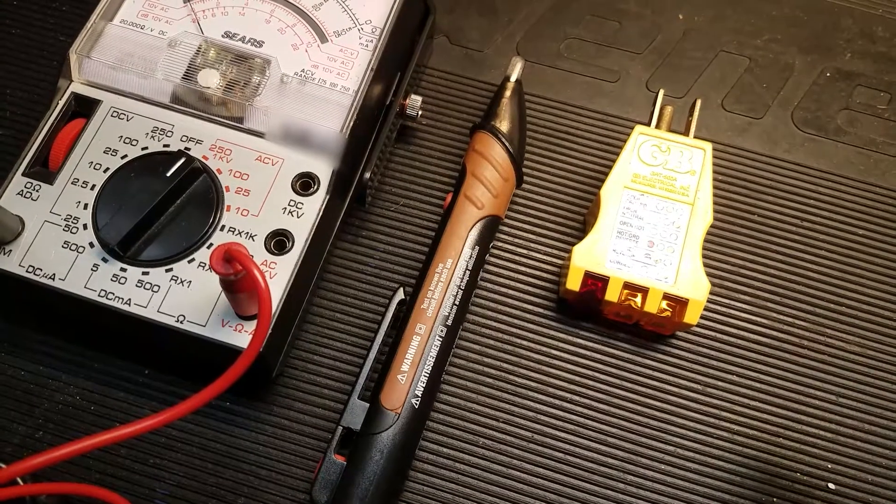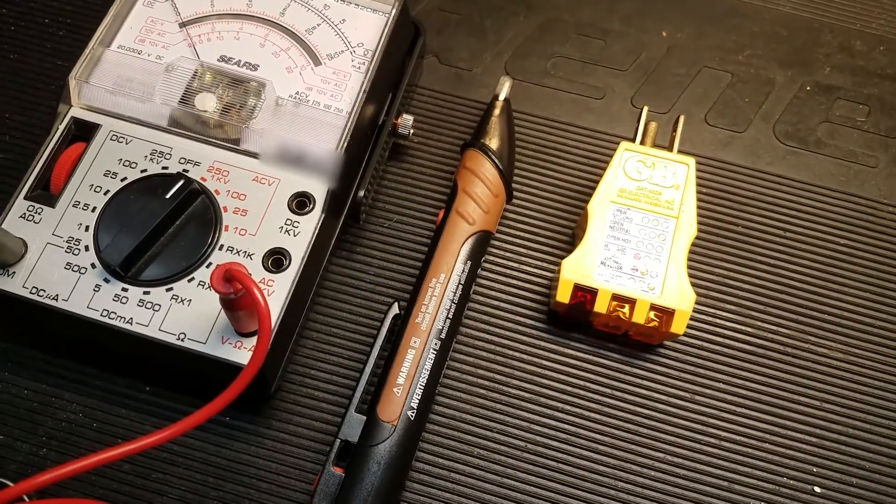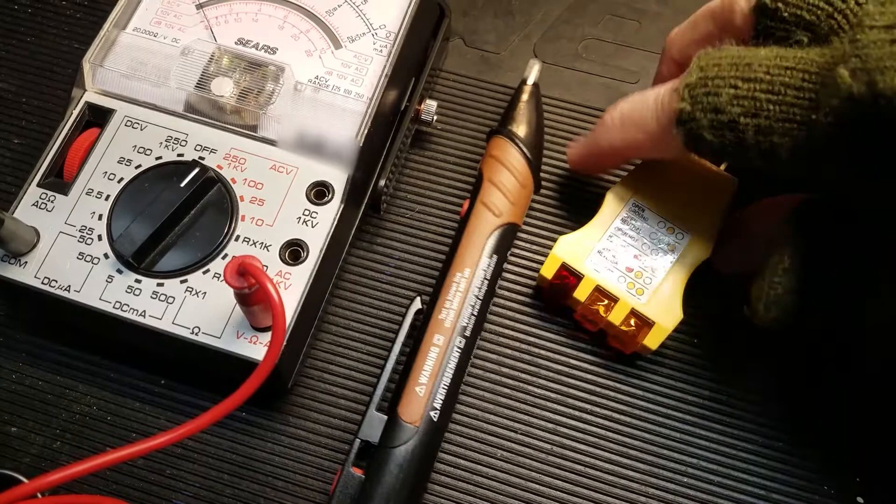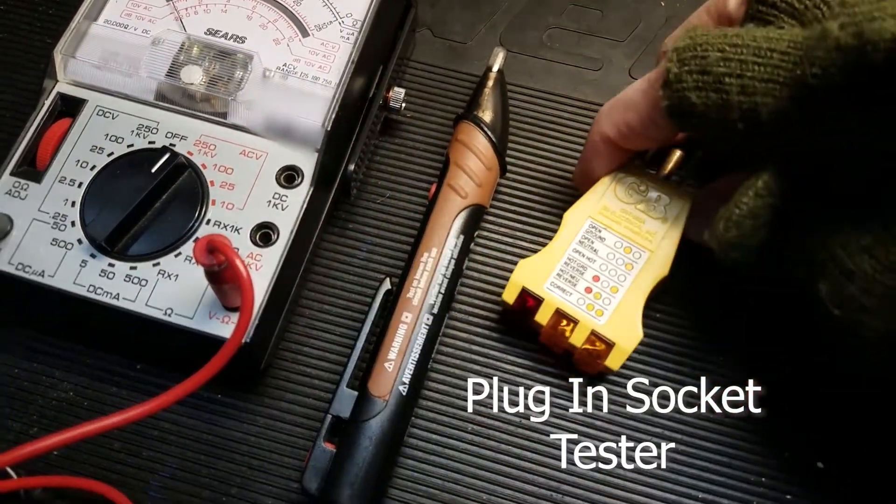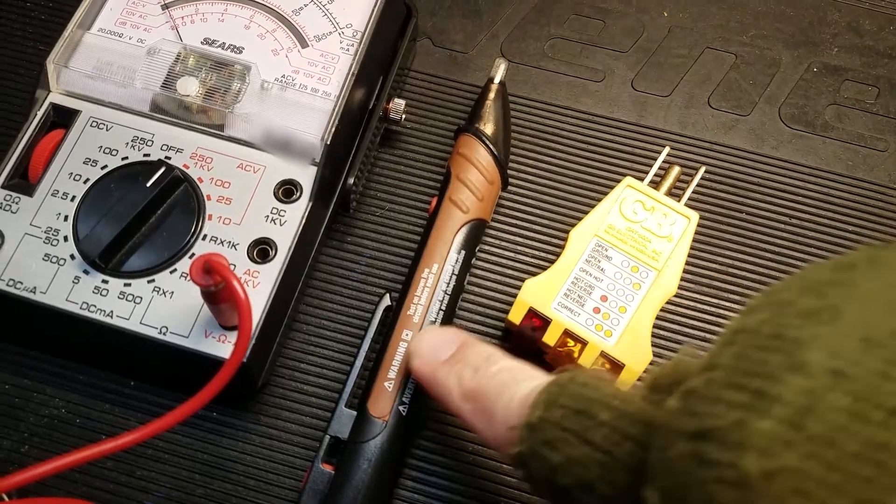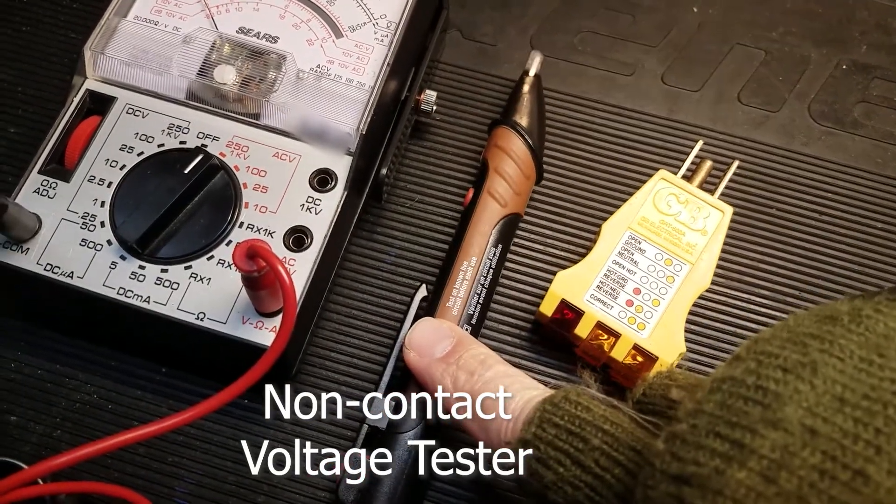What do I use to verify that the circuit is off when I flip the circuit breaker? I have this plug-in type diagnostic tool, a non-contact voltage detector, and a voltmeter. Which one should I use?